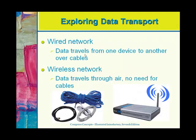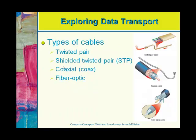A wired network versus a wireless network — the names are pretty self-explanatory. In a wired network, your data travels between devices through an actual physical cable. In a wireless network, the signal travels through the air and there is no cabling involved from computer to computer.